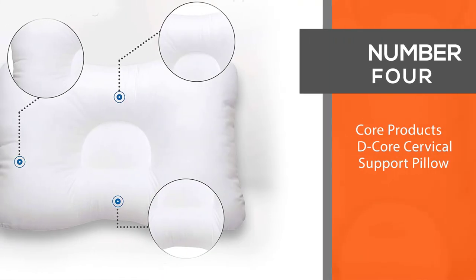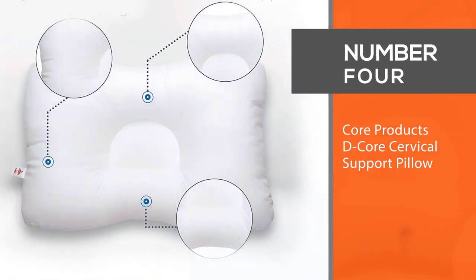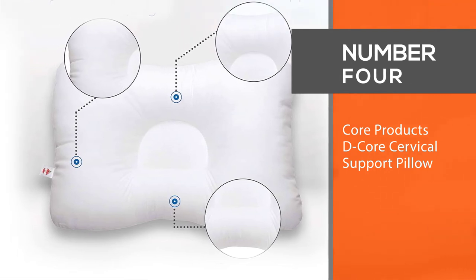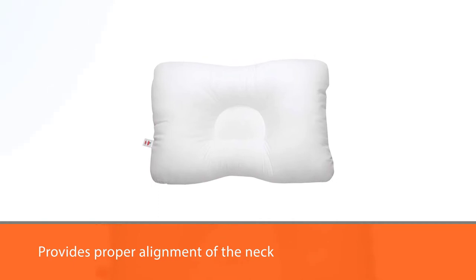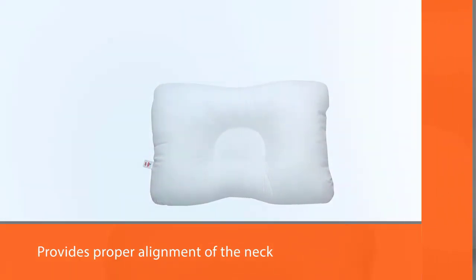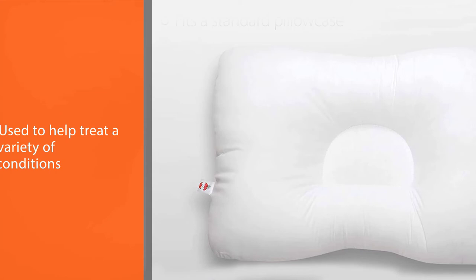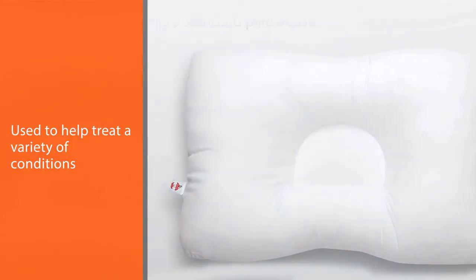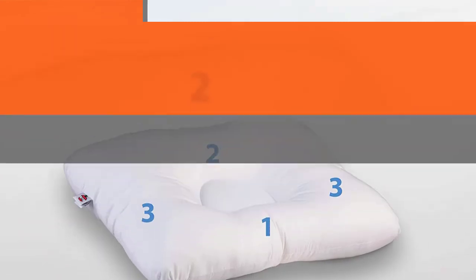Number four: Core Products D-Core Cervical Support Pillow. The D-Core cervical support pillow helps relieve tension headaches and neck spasms by providing proper alignment of the neck while sleeping. It is commonly used to help treat a variety of conditions affecting the neck and shoulders. The D-shaped center cradles the head as the firm cervical roll supports the neck.